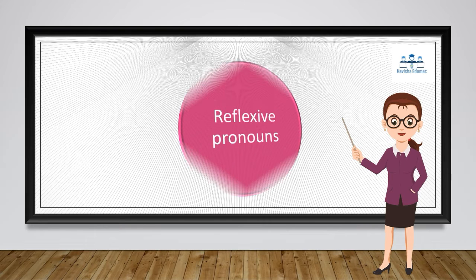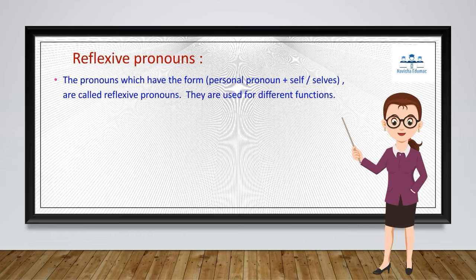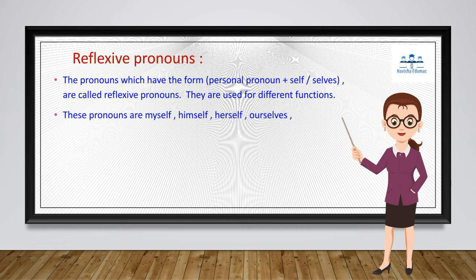Now let us see about reflexive pronouns. Reflexive pronouns have the form: personal pronoun plus '-self' or '-selves'. They are used for different functions. The reflexive pronouns are: myself, himself, ourselves, yourself, itself, yourselves, and themselves.